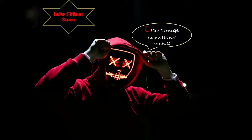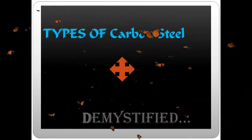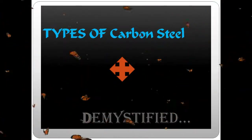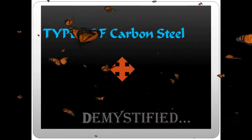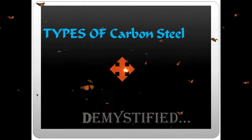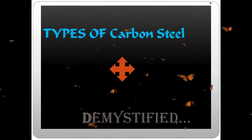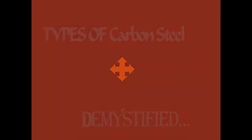Hey guys, welcome to another video of the under-five-minute series, where we try to learn a concept in less than five minutes. The topic for today is types of carbon steel. In our previous videos we have already discussed about carbon steels, so here we will talk about the different types. As we all know, the major element which dictates the properties of carbon steel is carbon.